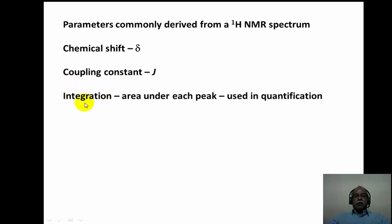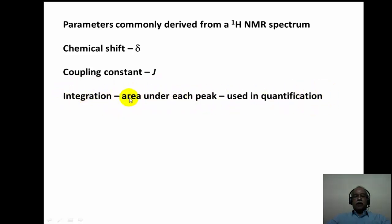The third parameter derived from an NMR spectrum is the integration, otherwise the area under each of the peaks. This is essentially used for quantification purposes. In pure compounds, it tells you the relative intensity and the number of protons under each of the chemically different hydrogens. In a mixture of compounds, it tells you the mole ratios of the compounds present in the mixture.